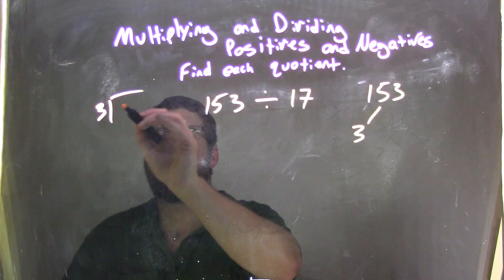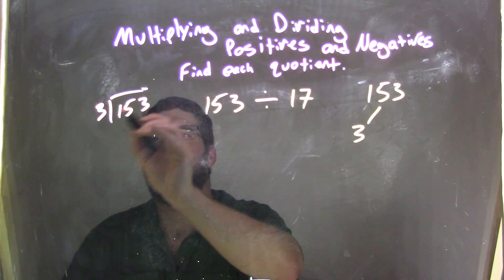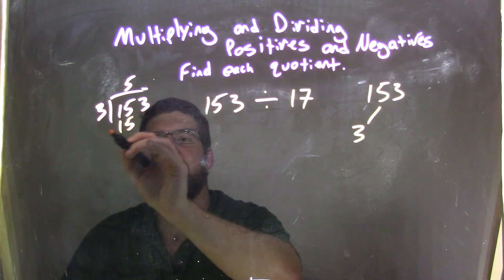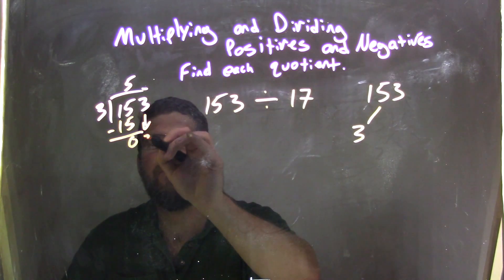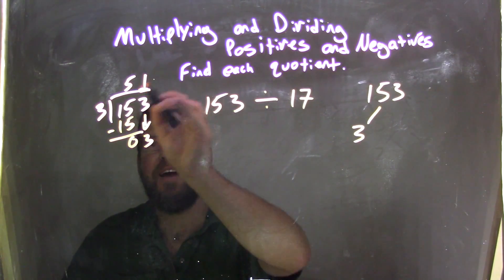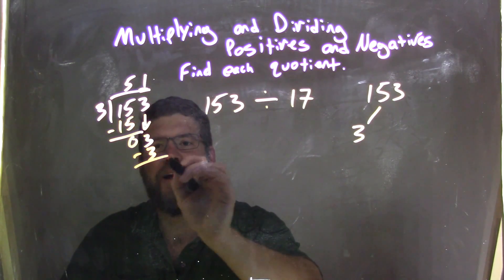Well, 3 goes into 15, that's 5 times, right? 5, 3, 15 right here. 0, bring out this 3, and 3 goes into 3 one time, right? And 1 times 3 is 3, subtract, 0, we're good.